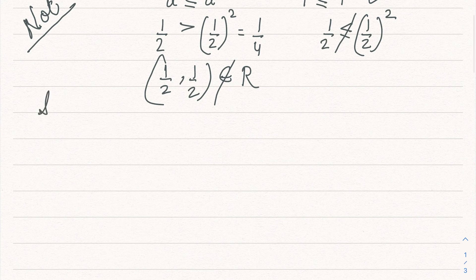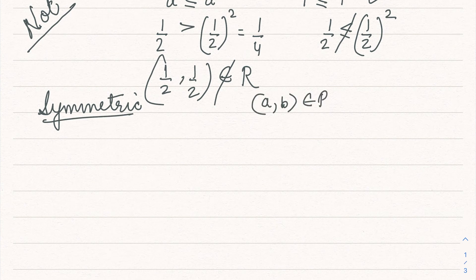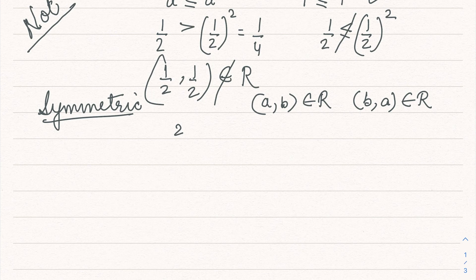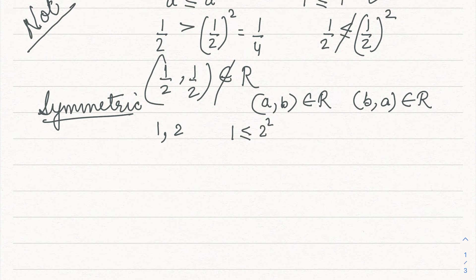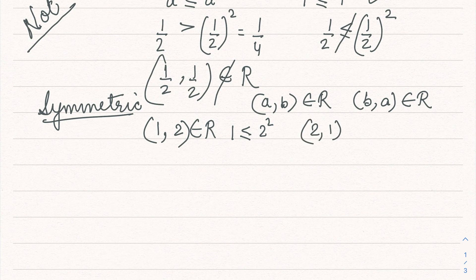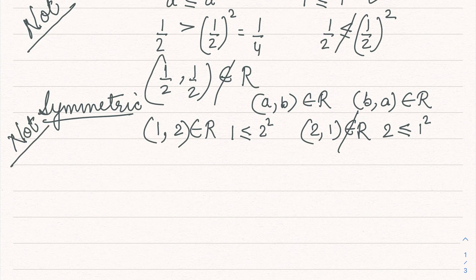Let's check for symmetric. The symmetric condition requires that if (a, b) belongs to R then (b, a) also belongs to R. Take a = 1, b = 2: 1 ≤ 2² = 4, which is true, so (1, 2) belongs to R. Now check (2, 1): is 2 ≤ 1² = 1? This is not true, so (2, 1) does not belong to R. Therefore the relation is not symmetric.